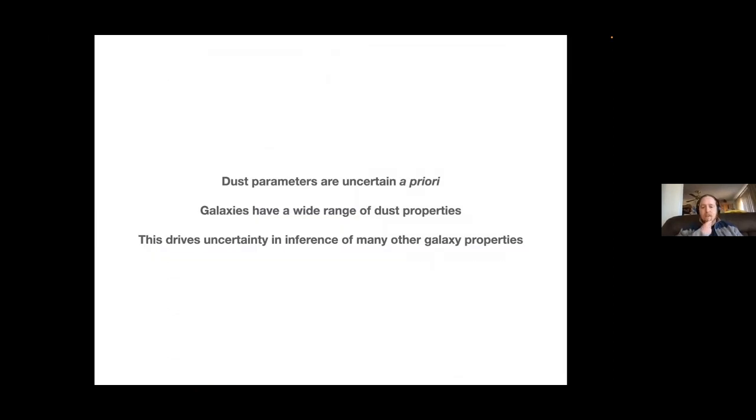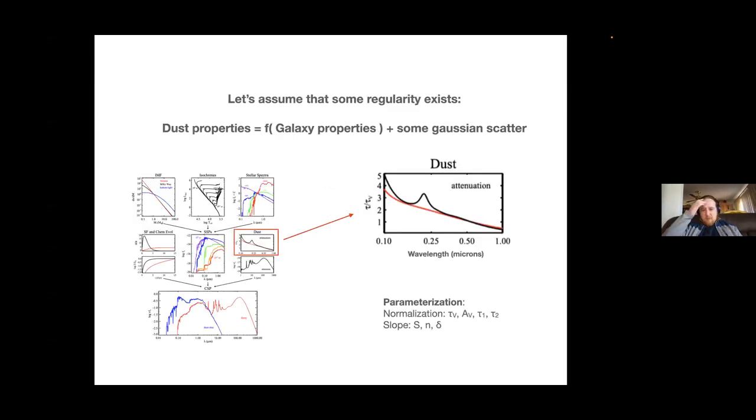What this leads us to is the point that dust parameters for any individual galaxy are quite uncertain a priori. Individual galaxies have a wide range of dust properties, and because the dust properties are degenerate with other properties - the age and star formation history, metallicity - this uncertainty in the dust drives uncertainty in a lot of other parameters that usually you care about more than you care about the dust, although this project is an exception to that. So what we're going to do is focus our efforts on trying to understand this piece of the SED fitting puzzle.